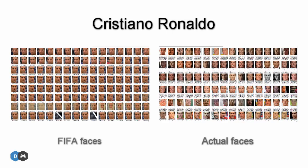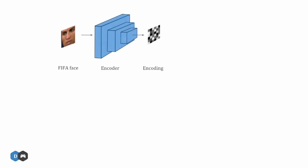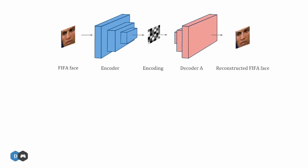Let's try this on Ronaldo. First, we need to collect a lot of images of his face from FIFA and then his actual face from Google. We train a first network to encode Ronaldo's FIFA face into a compact representation and then decode this representation to reconstruct the face back. This encoding enforces the network to actually learn the distribution that generates the face rather than simply returning the input image.